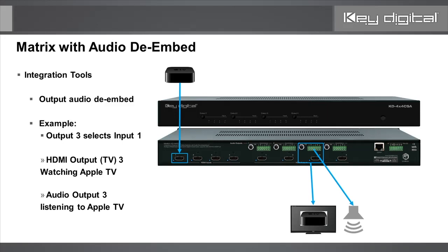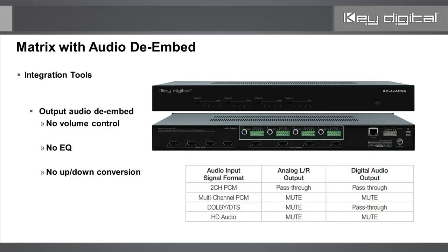It is an output audio de-embed, not an input audio de-embed. The feature does not have any DSP or up/down conversion, so if you'd like two-channel audio as your analog audio output, you need to ensure that through the EDID control you're telling the source to provide a maximum of two-channel PCM audio on the HDMI input connection.